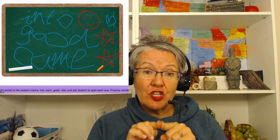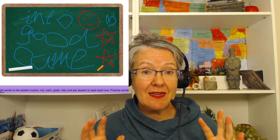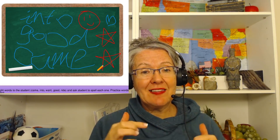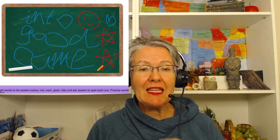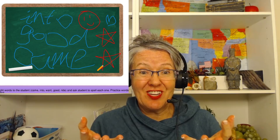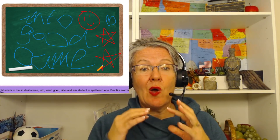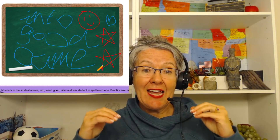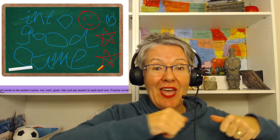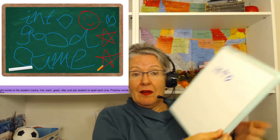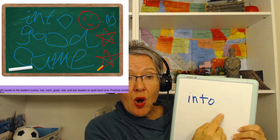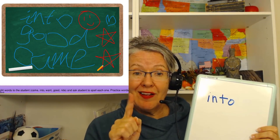I want her to do this as a spelling bee, so I model it first. I say the word and I say, 'Coco, spell into.' The student writes 'into' and then they're silent — does that happen to you? So I started teaching my students how we spell in a class in America. She wrote 'into' and stopped. I say, 'Good job, Coco! Here is how we spell: say the letters — I, N, T, O — then say the word.'